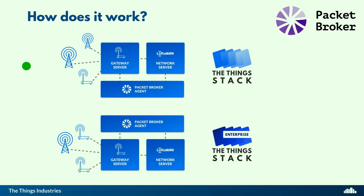It can be either the Things Stack or the Things Enterprise Stack. Since the APIs are open, we welcome other LoRaWAN network server vendors to look at the API and to see if they should implement it as well. It's fully open. We would be very happy to work with other LNS vendors and to see them join the Packet Broker initiative.